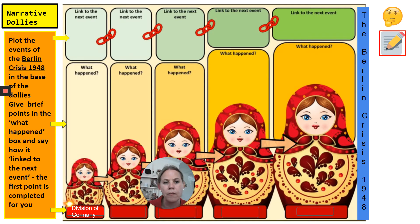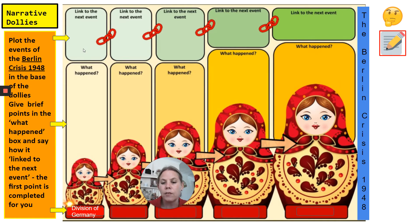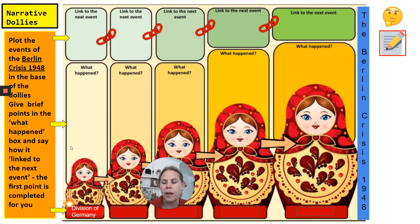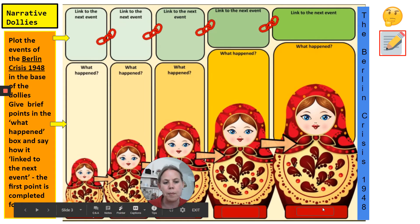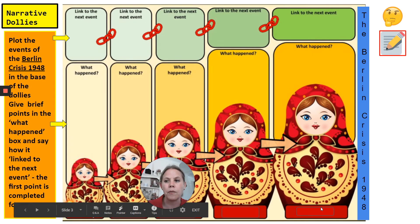The first thing that you would talk about, to introduce, would be the division of Germany, and then give an explanation of what happened here — you could do that as a few bullet points. Then think about how it links to the next event, using words that connect it. Put your next event down at the bottom, a little explanation of what happened, and how it links to the next stage, and so on. Your first task then is to go through the Berlin Crisis step by step, all the things you're going to explain, and talk about what happened and how it's linked from one part of the story to the next.